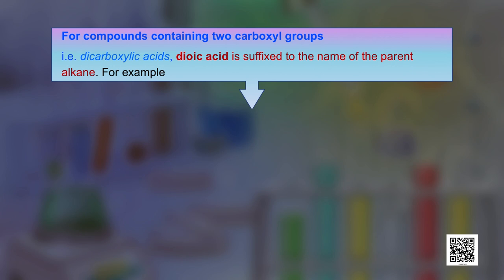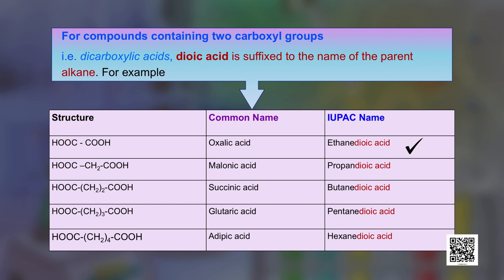Let us now see how compounds containing 2 carboxyl groups are named. These are called dicarboxylic acids, and we suffix '-dioic acid' to the name of the parent alkane. For example, oxalic acid is the common name; the compound contains 2 carboxyl groups and the IUPAC name is ethanedioic acid. If the 2 carboxylic groups are attached to a 3-carbon chain, it is called malonic acid (common name), and the IUPAC name is propanedioic acid — we omit the final 'e' of the alkane and add '-dioic acid' as suffix.